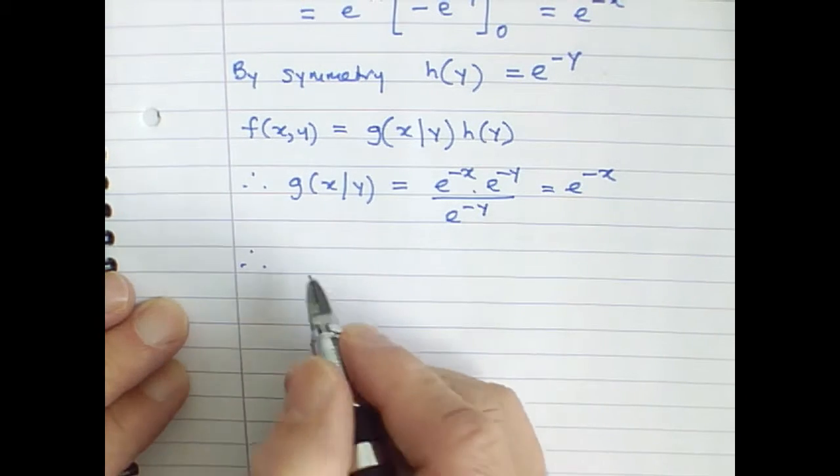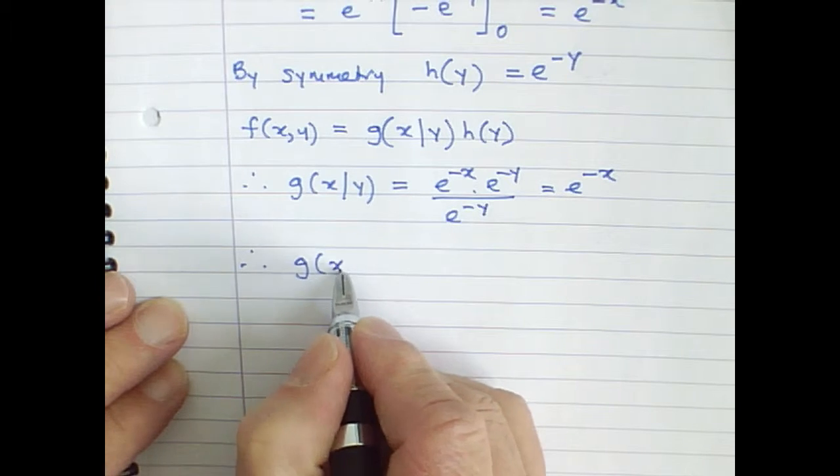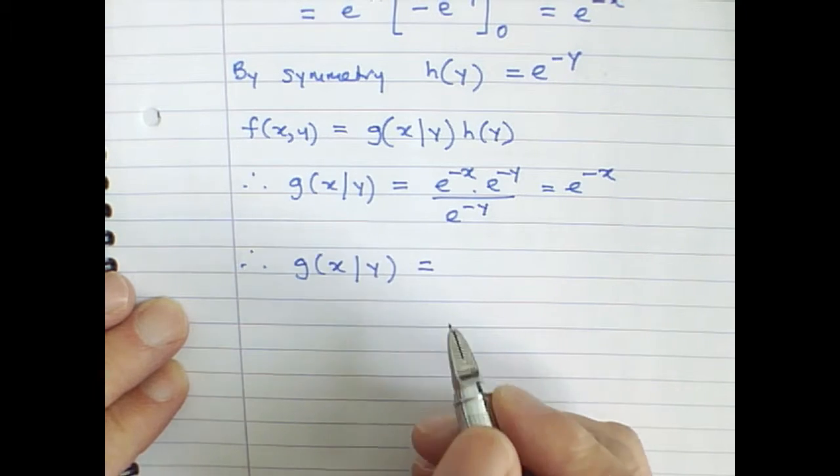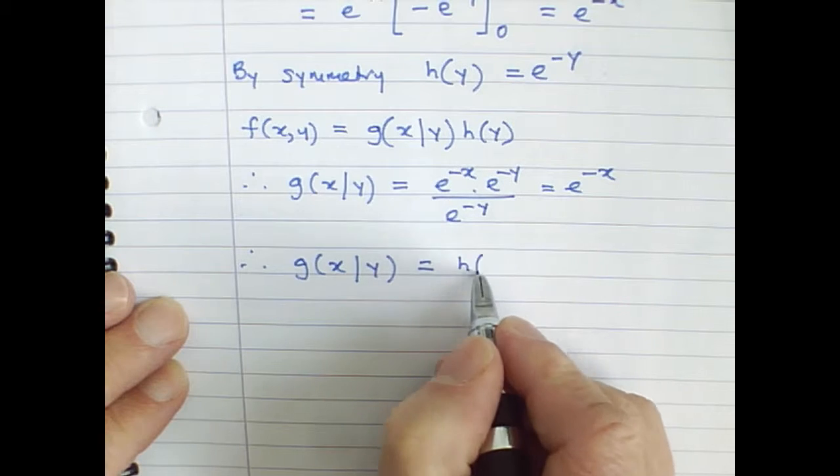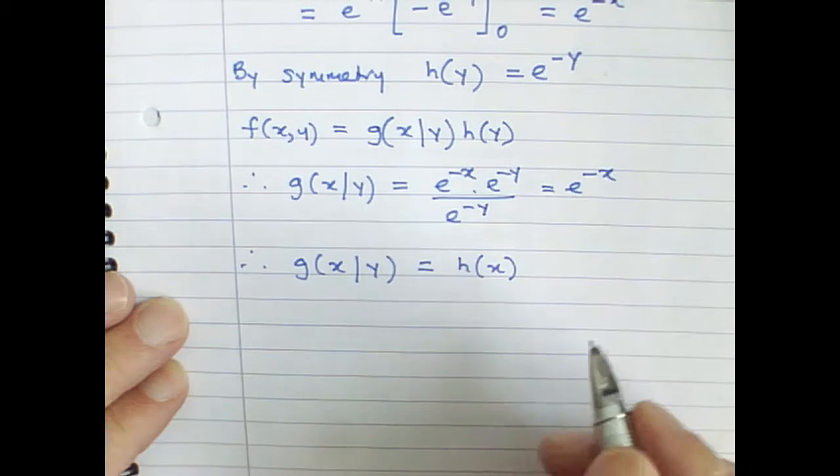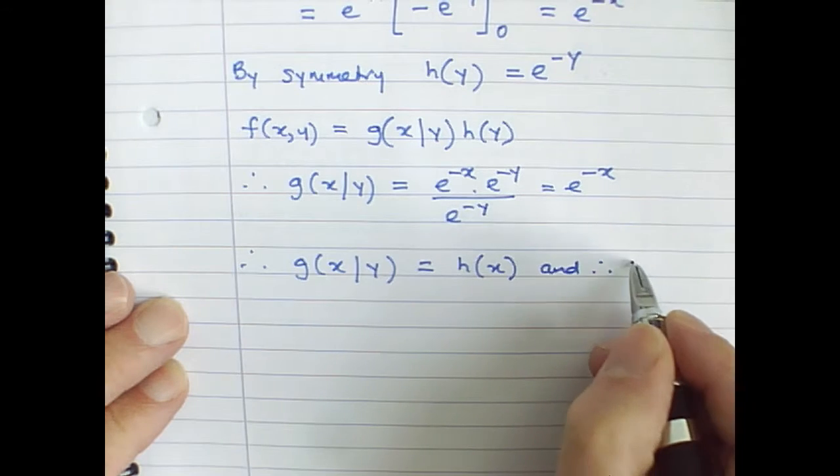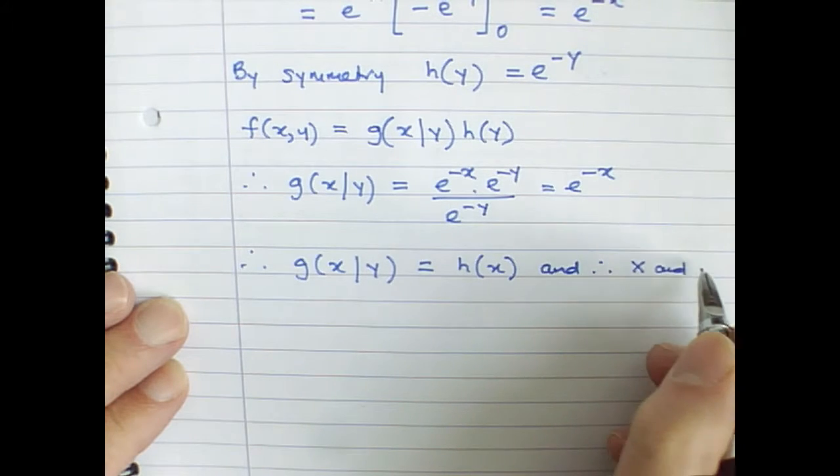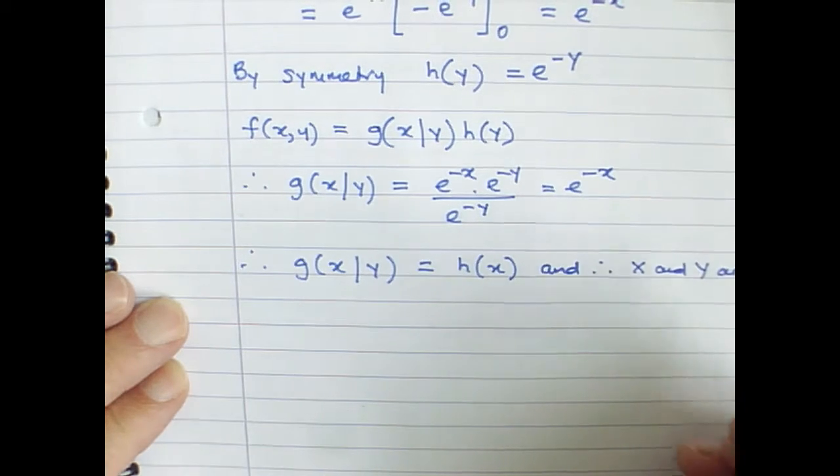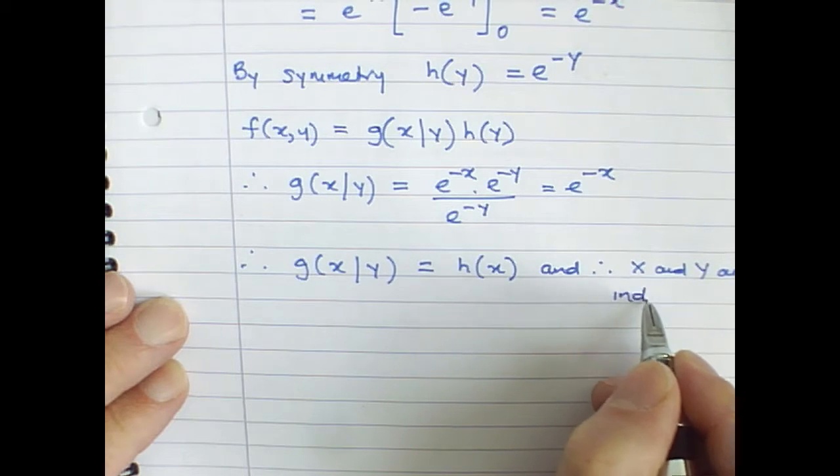So it therefore follows that the conditional distribution of x given y is equal to the marginal distribution of x, h(x). That's the definition of variables being independent. So therefore x and y are independent random variables in this case.